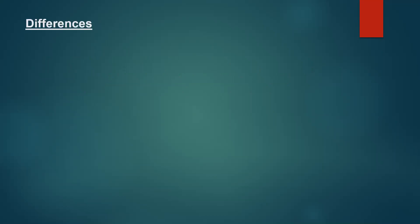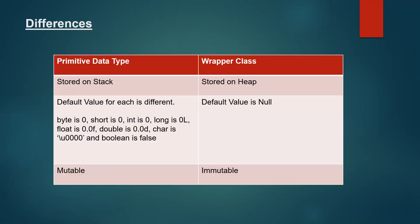Now let us see the differences between the two. Primitive data types are stored on the stack, whereas wrapper class objects, like any other objects, are stored on heap memory. The default value for each primitive data type is different — for example, byte, short, and int default to 0, and boolean defaults to false. The default value for a wrapper class object is null, since any object that is not initialized defaults to null.